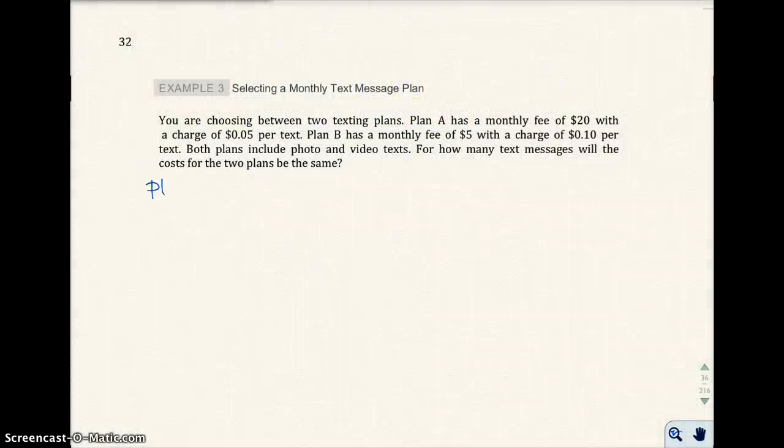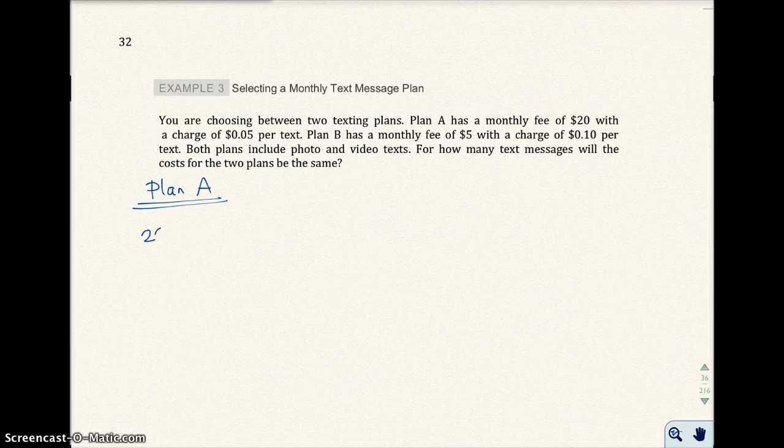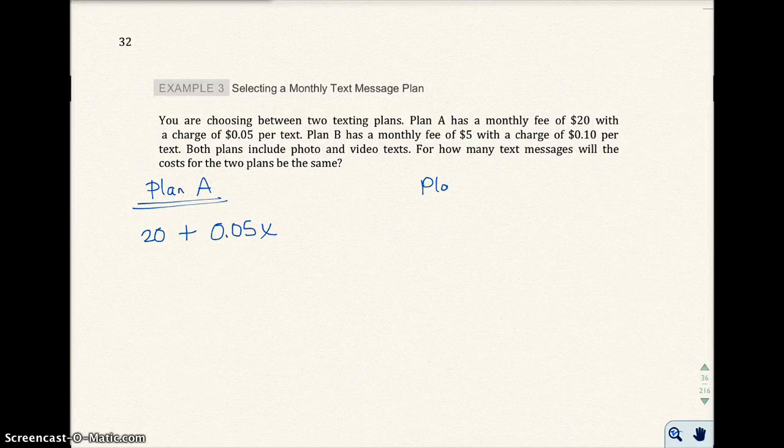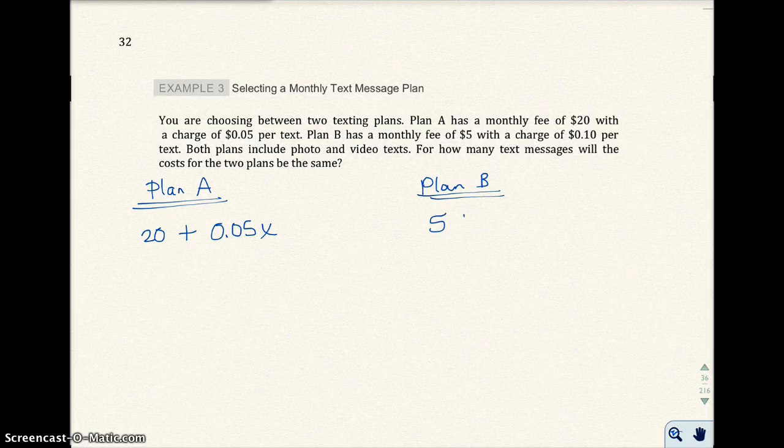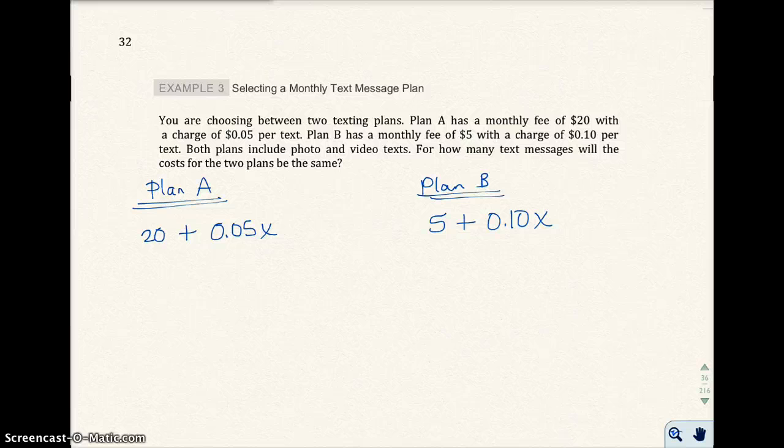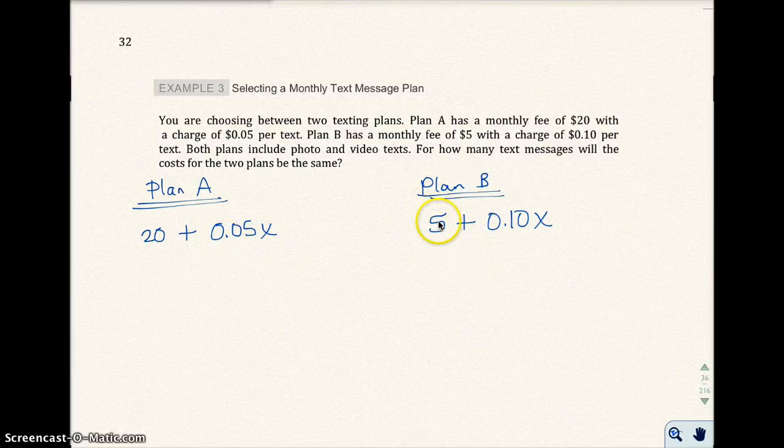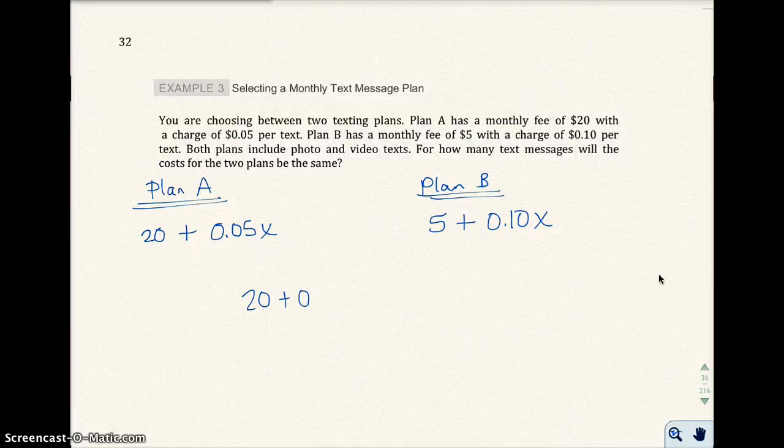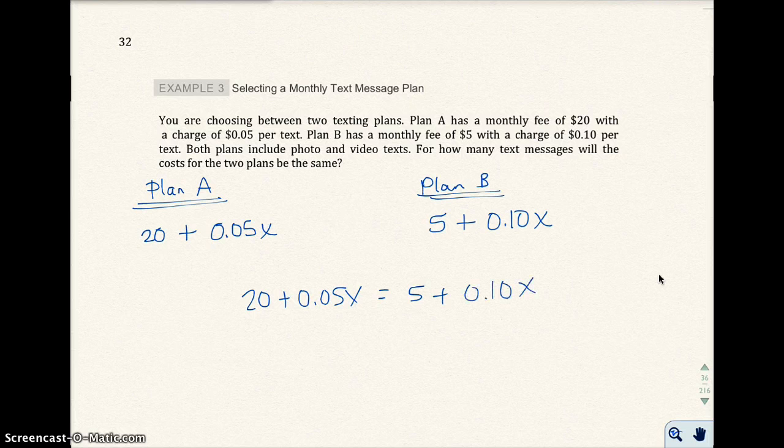Let's look at plan A. Plan A is going to charge you $20, plus 5 cents per text. So we're going to do 5 cents times the number of texts. I'll use x because we don't know how many texts you're sending. Plan B has a monthly fee of $5, plus 10 cents per text, so 10 cents times x. Notice here in plan A you're charged $20, a lot more than this plan initially. But every text message is a lot cheaper, it's only 5 cents. Whereas this plan is very cheap at $5 to start, but you pay 10 cents per text. We want to know how many text messages will the plans be the same. We're going to take each of these expressions and set them equal to each other.